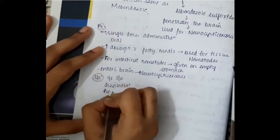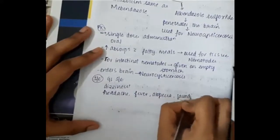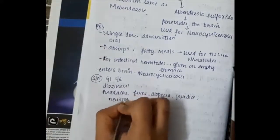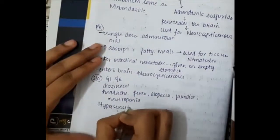Side effects: we have GI side effects like dizziness, headache, fever. It causes alopecia, jaundice, and it also causes neutropenia. Then it also causes hypersensitivity reactions.